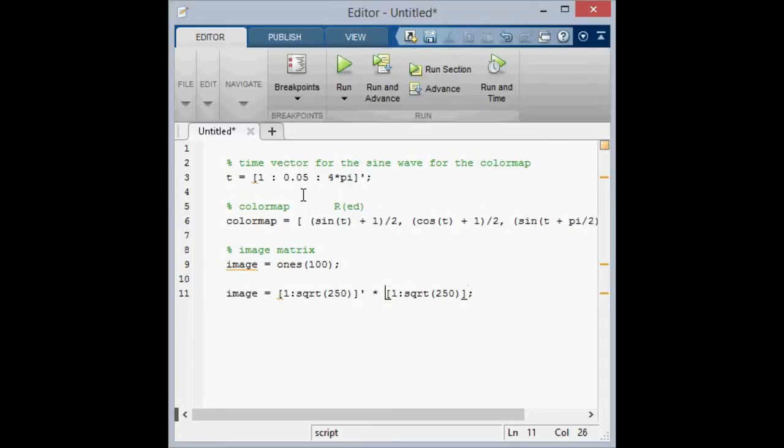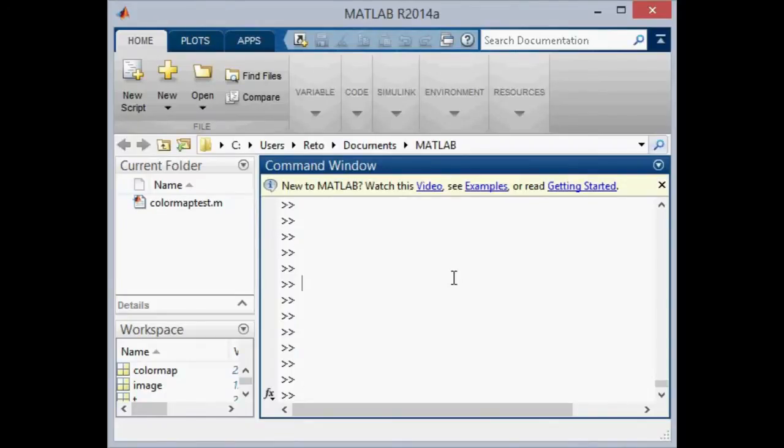What this does now is the following. This is a column vector times a row vector. Usually mathematicians would say this cannot work, this is not possible. But in fact it does here. Because in this case, every element with every vector is multiplied and it creates a matrix. So let's delete the upper one and check out what it does. I have saved this script under colorMaptest.m. And I'm just now executing it. First of all, clear all, close all, just to be sure. Usually I do that in the script. I do it now here in the command window so you can see that I do it. Okay, I'm executing colorMaptest.